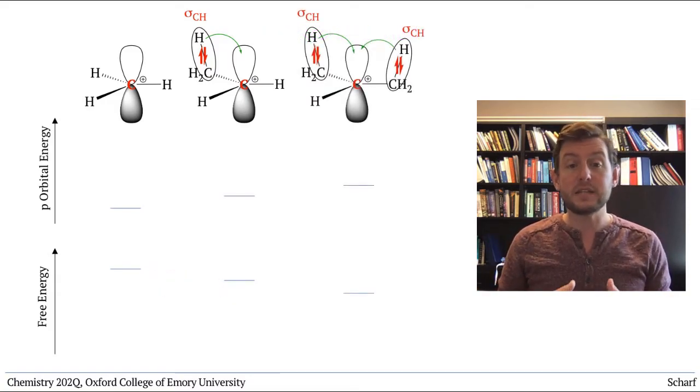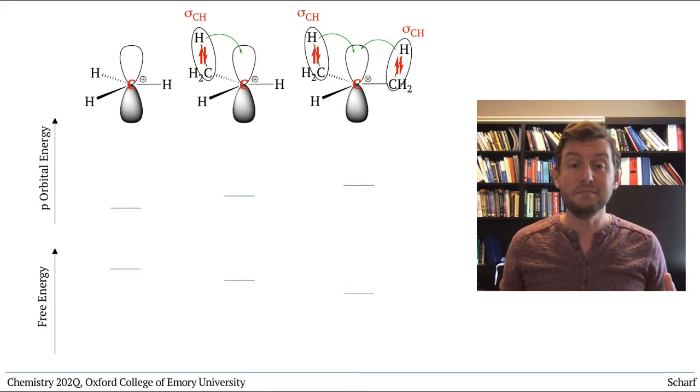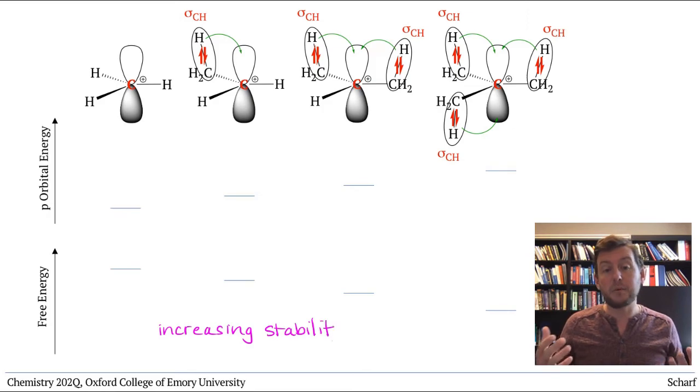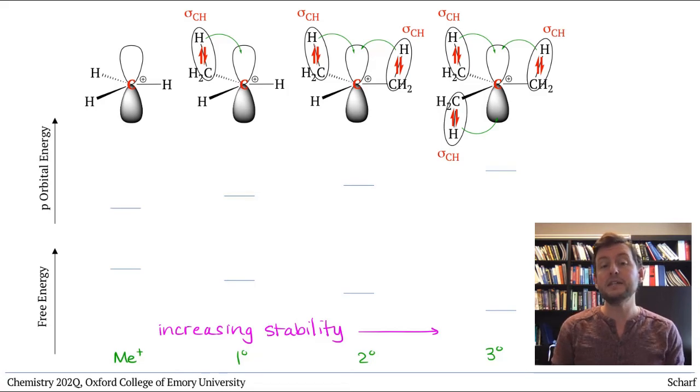This means that the methyl carbocation is really very unstable. Primary carbocations are only slightly more stable. Secondary carbocations are more stable yet, and tertiary carbocations are relatively stable. They're the easiest to form of any of these types of carbocations.